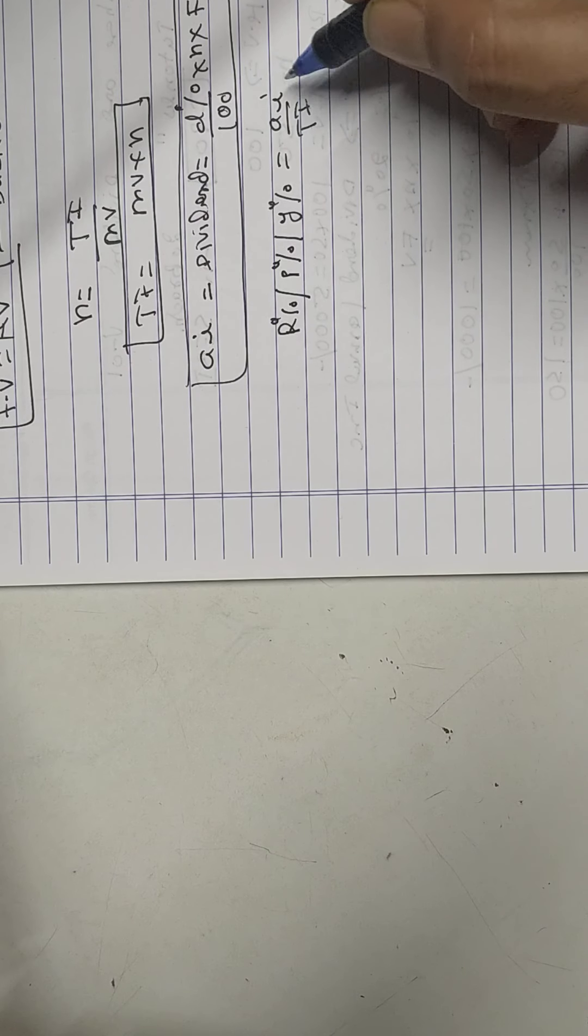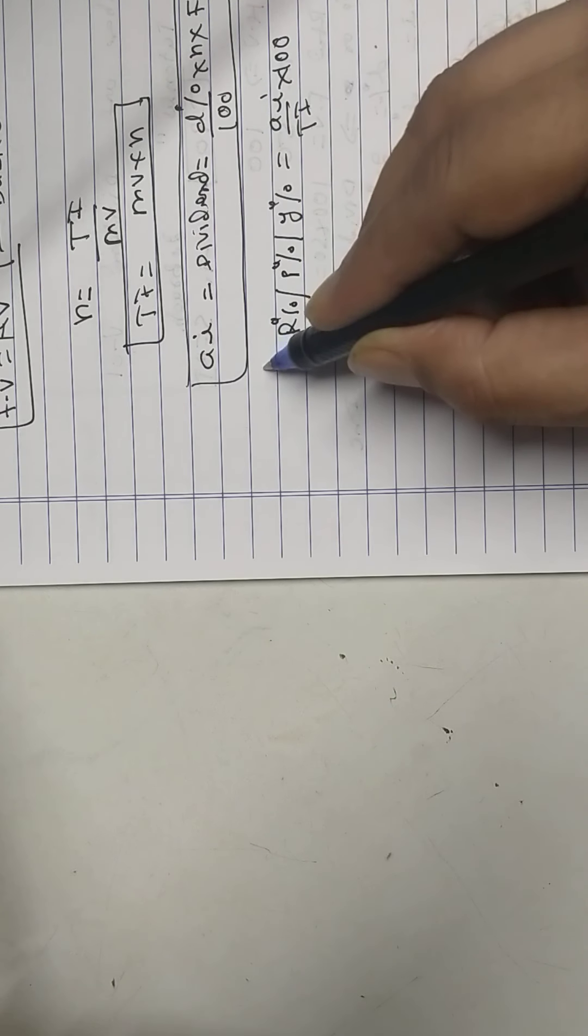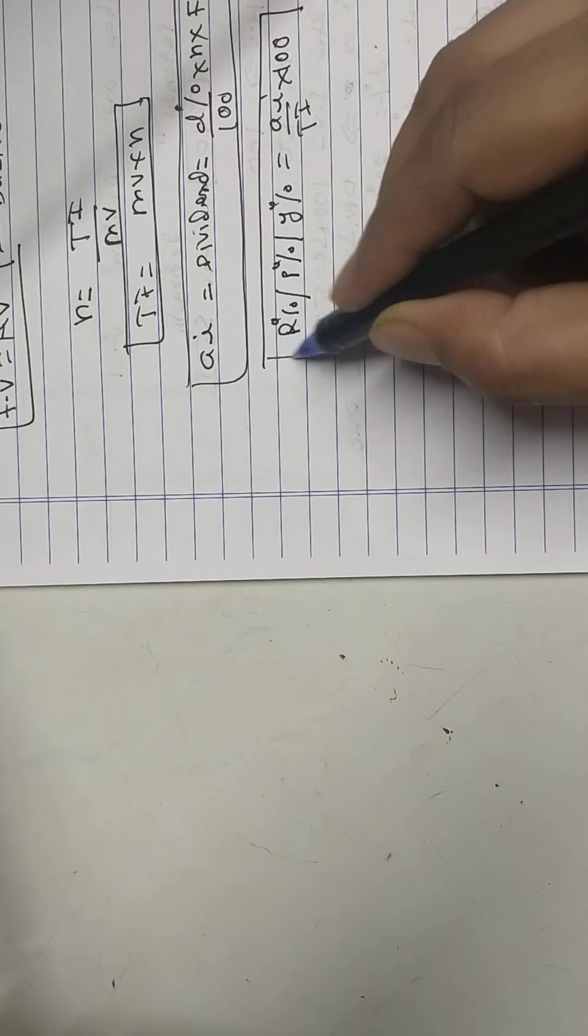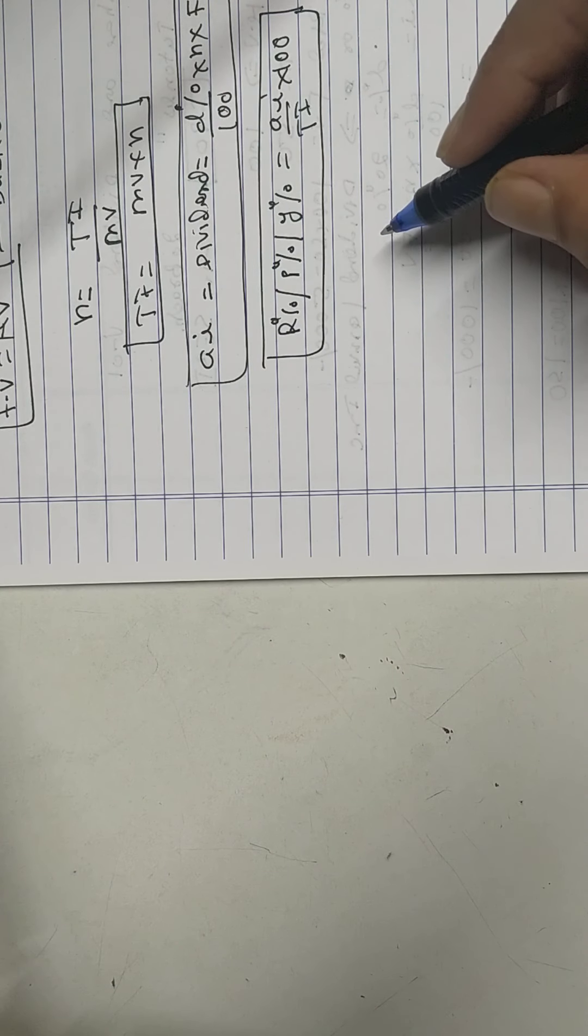Annual income or dividend paid by companies: rate of dividend upon 100 into number of shares into face value. This is the second formula.